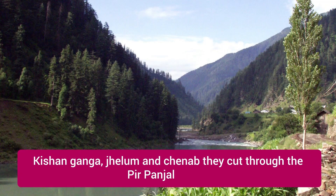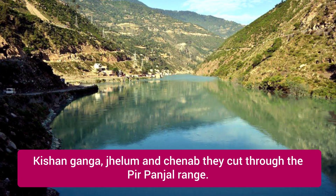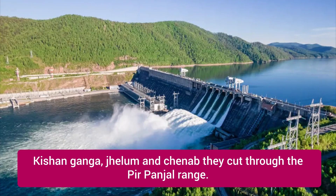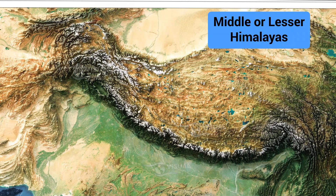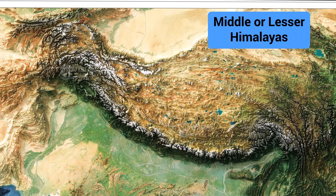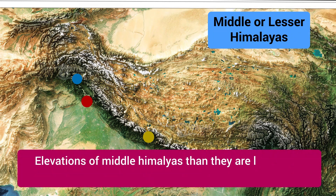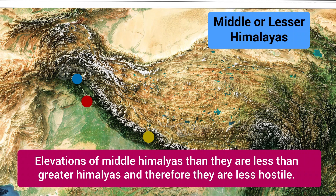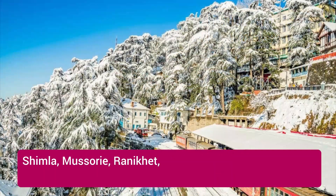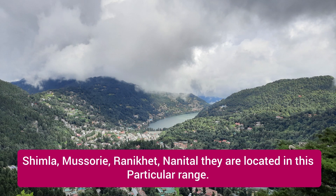Rivers like Kishanganga, Jhelum, and Chenab cut through the Pir Panjal Range — Kishanganga is often in the news because of its hydroelectric power plant. Moving further east, we have the Mussoorie Range, Nag Tibba Range, and Mahabharat Range. The elevation of the Middle Himalayas is less than the Greater Himalayas, making them less hostile. Majority of hill stations such as Shimla, Mussoorie, Ranikhet, and Nainital are located in this particular range.